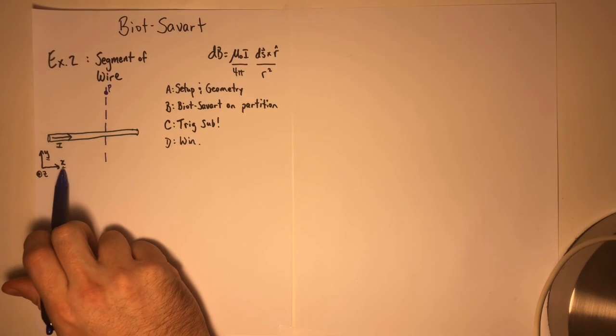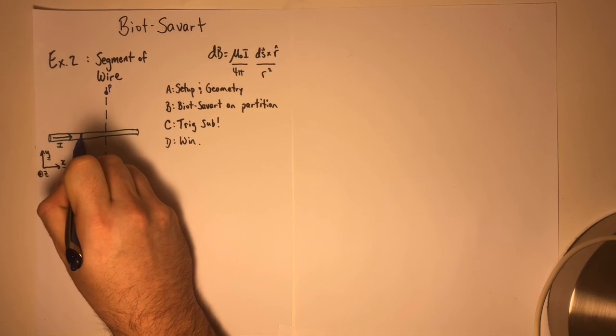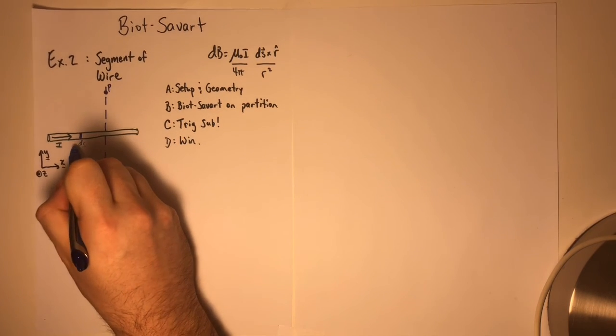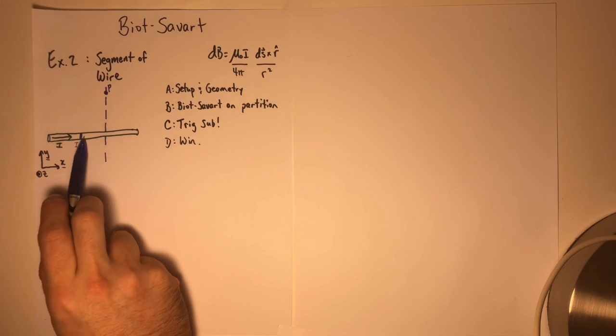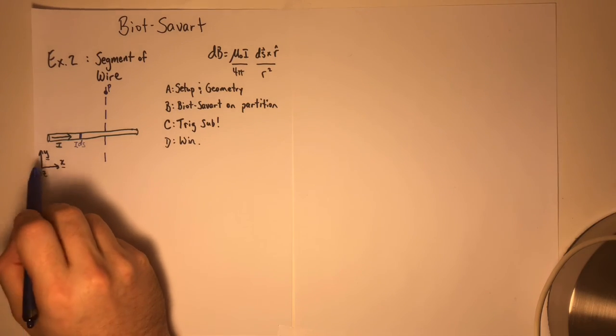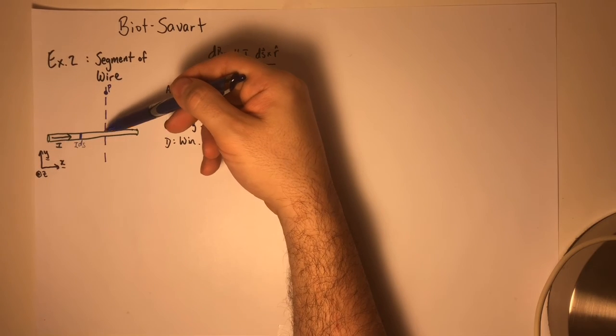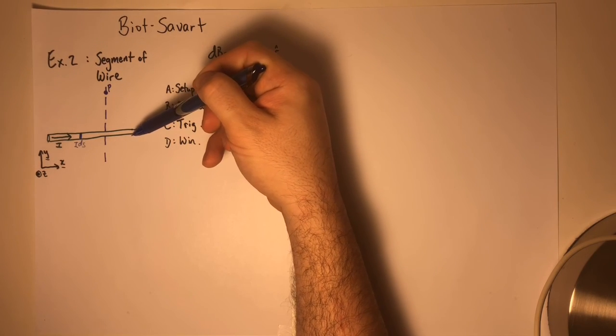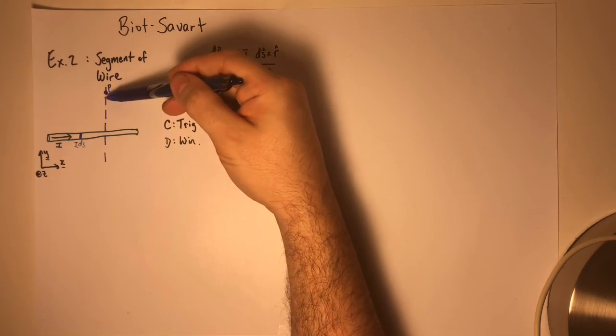As you'll see in a moment, because our partition is going to be some little piece of this wire, X will be a thing that changes because the partition will move from the left to the right as we integrate. However, the Y direction, the distance from point P to each one of these current elements, is not any different in the Y direction. The only thing that changes is the X distance.